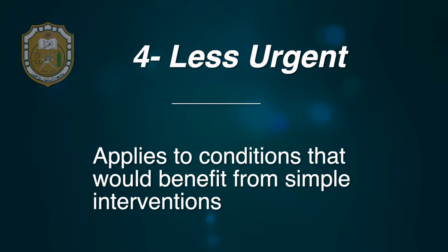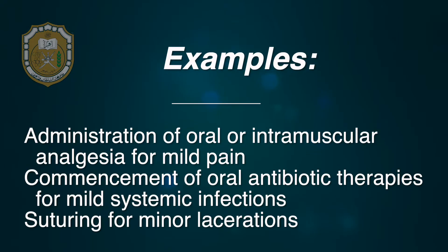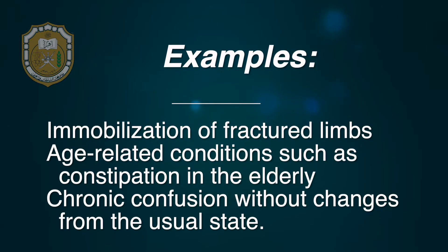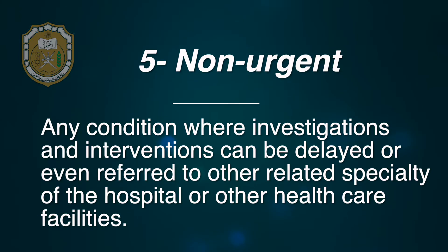Category 4 is the less urgent level. This applies to conditions that would benefit from simple interventions, such as administration of oral or intramuscular analgesia for mild pain, commencement of oral antibiotic therapies for mild systemic infections such as UTI or URTI, simple procedures like suturing for minor lacerations, immobilization of fractured limbs, and age-related conditions such as constipation in the elderly and chronic confusion without changes from the usual state.